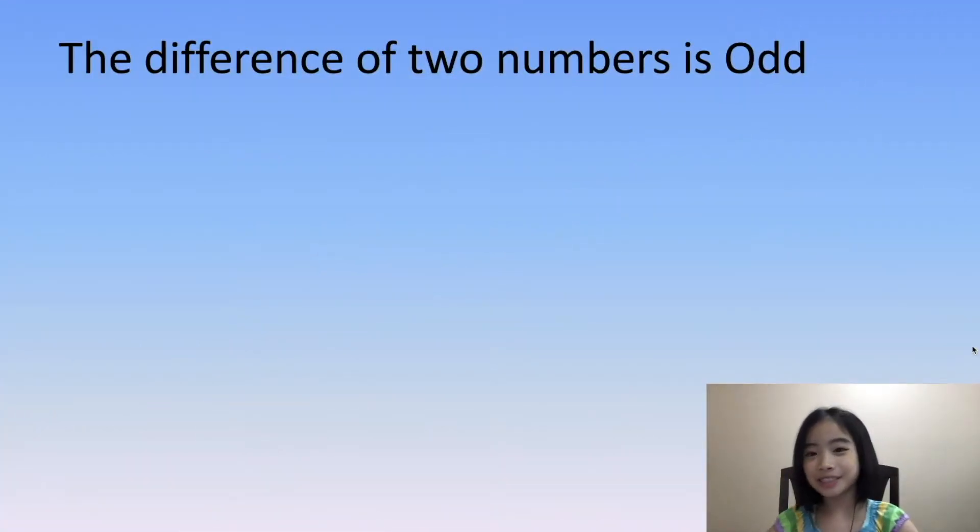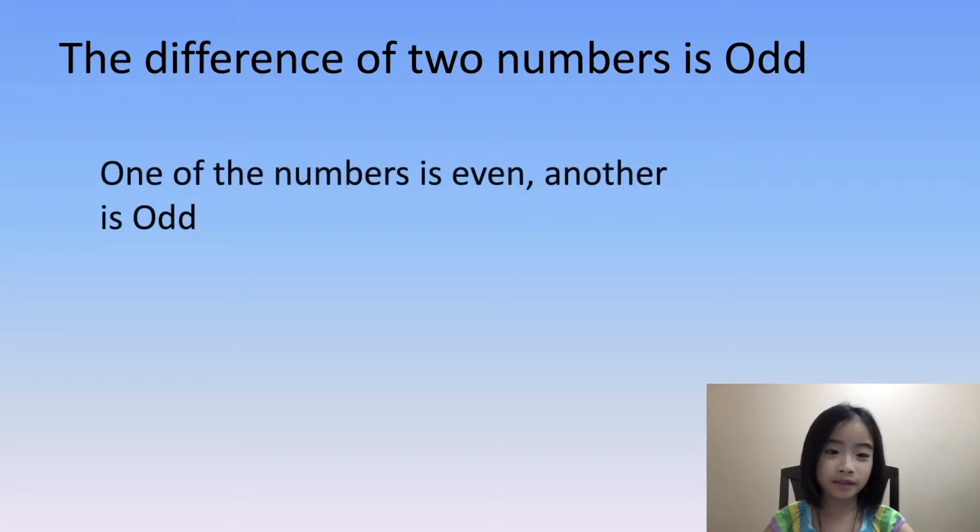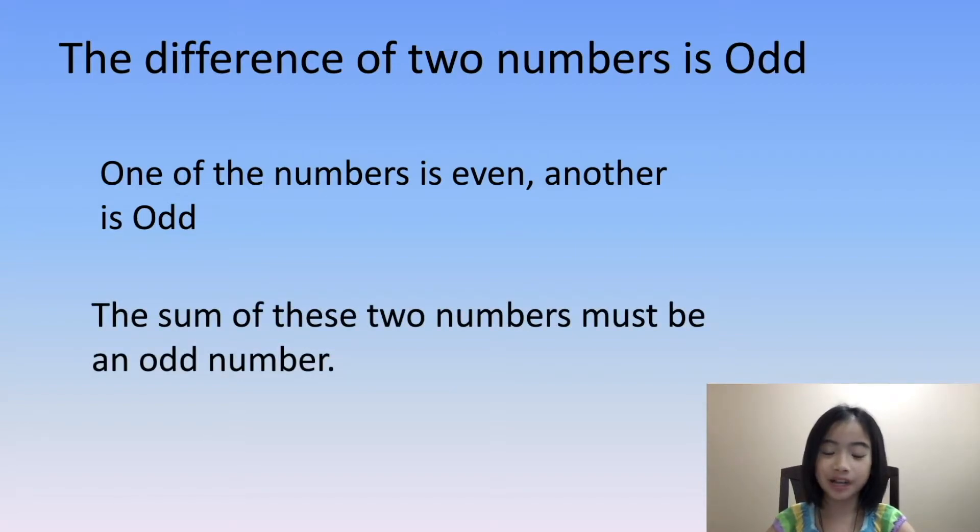If the difference of two numbers is odd, then one of the numbers is even, another is odd. So the sum of these two numbers must be an odd number.